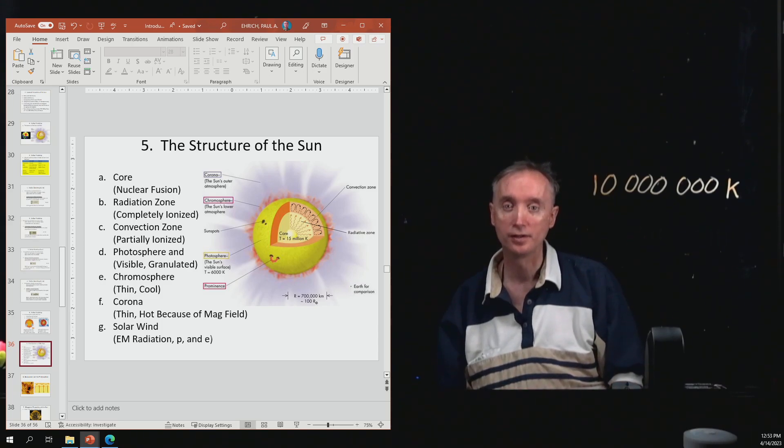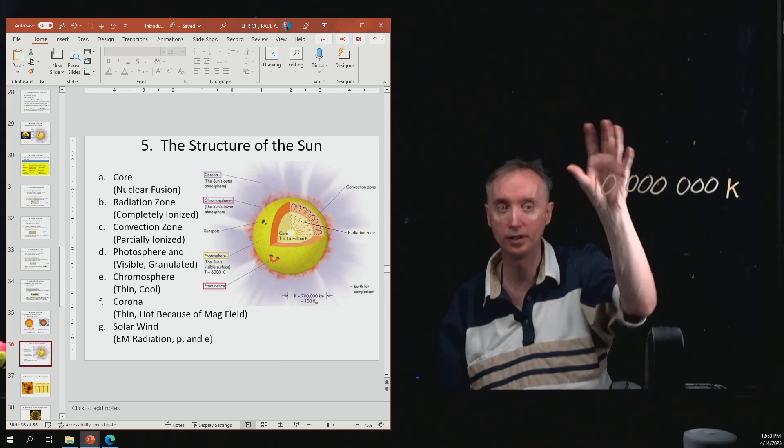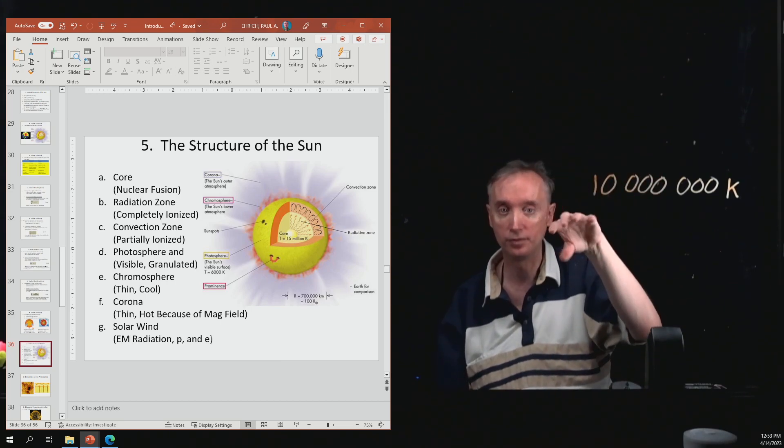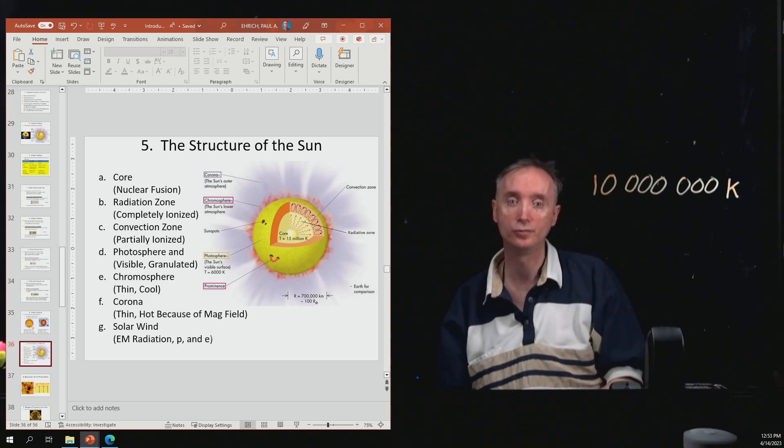And then you should know, let's lump together chromosphere and corona. Let's put those two together and just call that the atmosphere of the Sun. That's the part of the Sun that you can see during an eclipse. So during an eclipse, you'll see this pearly, glowing thing around the Sun. And you're looking at its atmosphere when you do that.